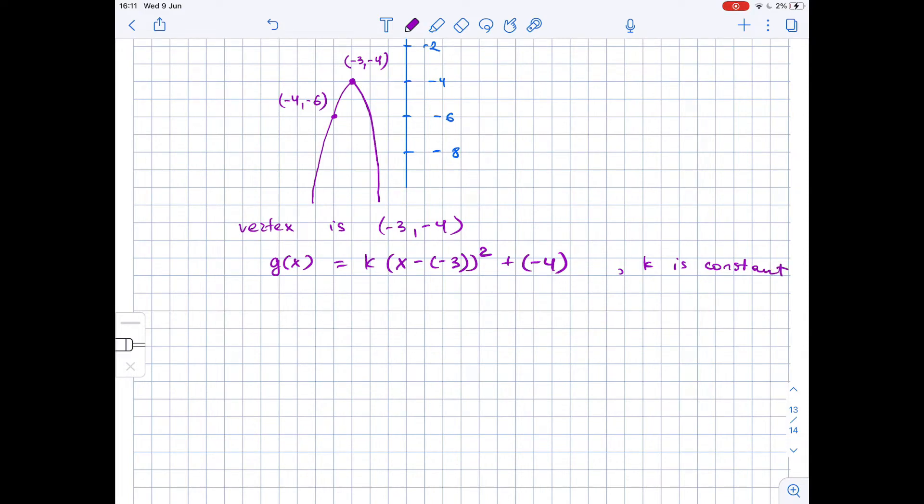Let's simplify it, so we get g(x) is equal to k times (x + 3) squared minus 4. We also know that our quadratic equation is passing through the point (-4, -6).